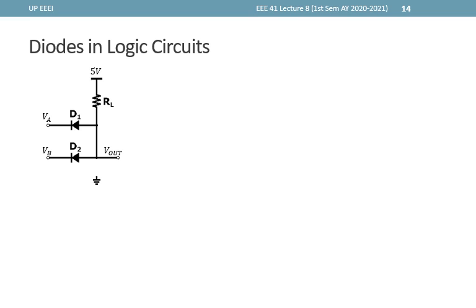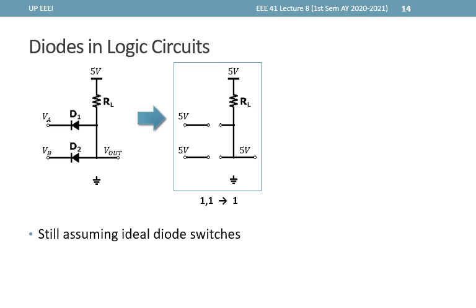For the next circuit, consider this one — again identify the logic gate type. Note that inputs are now connected to the cathode instead of the anode, and the other end connects to 5 volts through a resistor instead of ground. Assuming ideal diodes: when both inputs are 5 volts, all terminals are at 5 volts, no current flows, and the diodes are open. With no current through RL, there is no voltage drop, so the output is 5 volts — a logic 1.